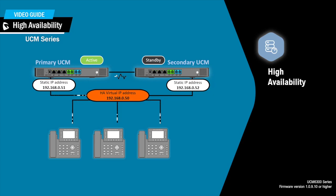For example, if you have a UCM that is already configured and up and running, and you decide to add another UCM for high availability, you can set the existing UCM to primary and add the new UCM as secondary. This way, once the HA configuration is completed successfully, the primary UCM will synchronize its existing configuration and data with the secondary UCM automatically.